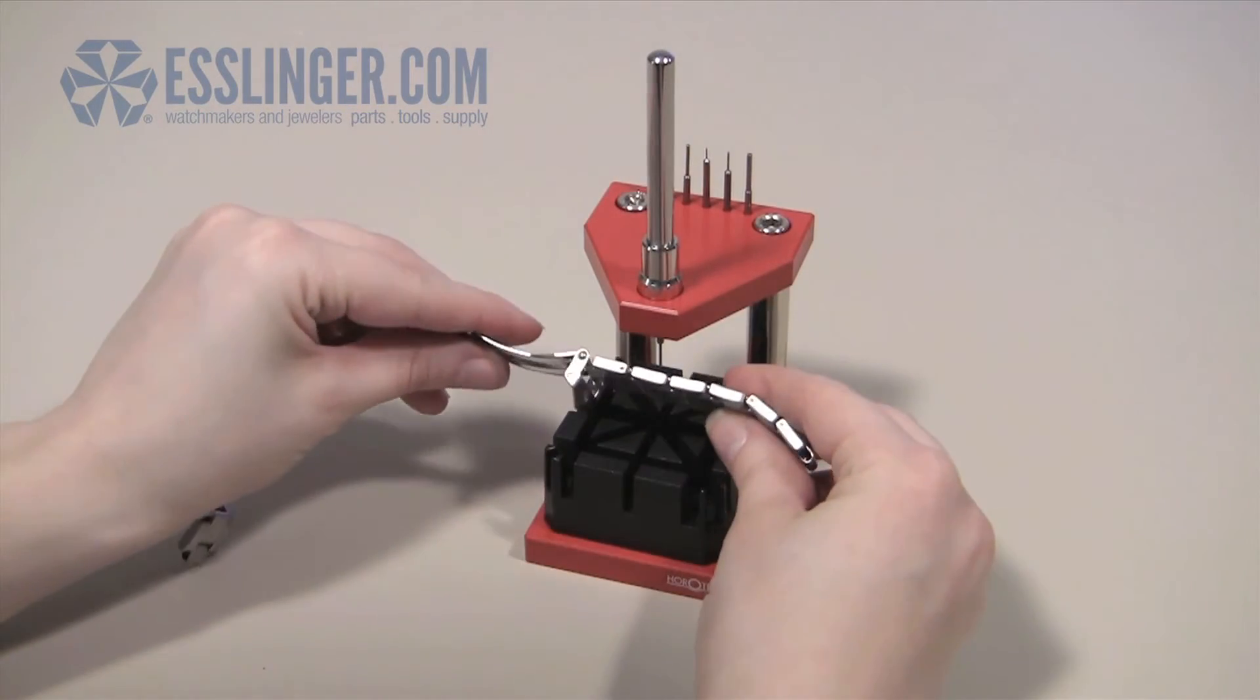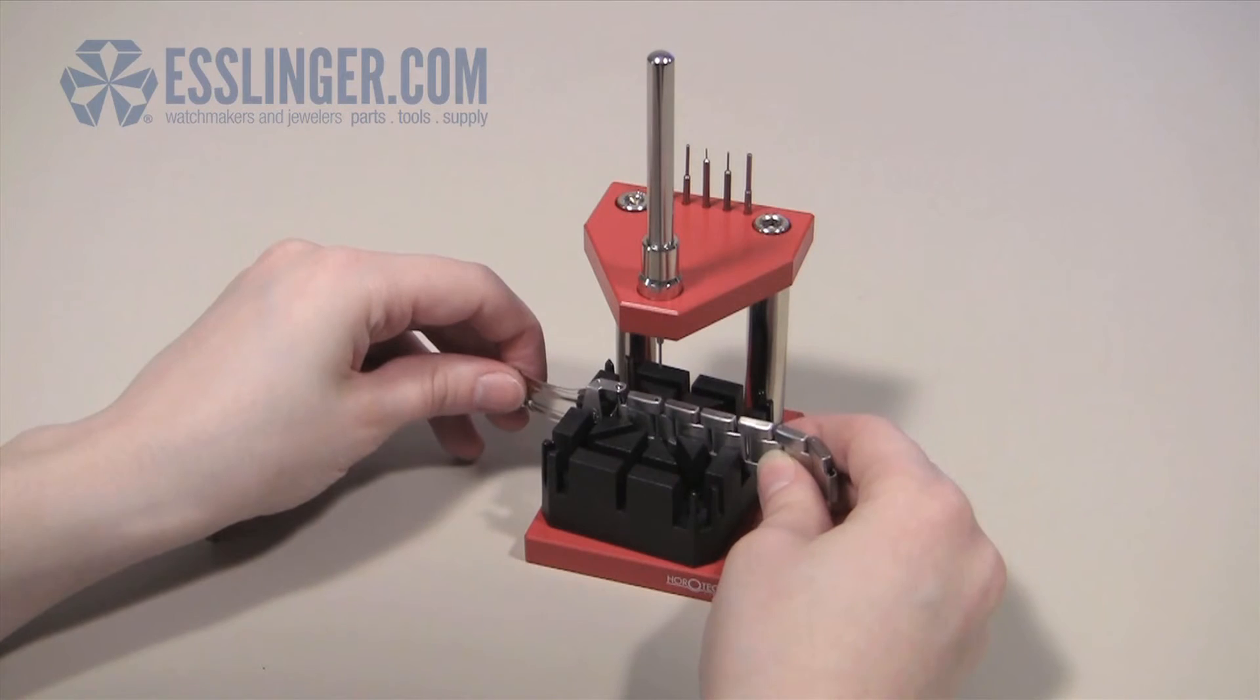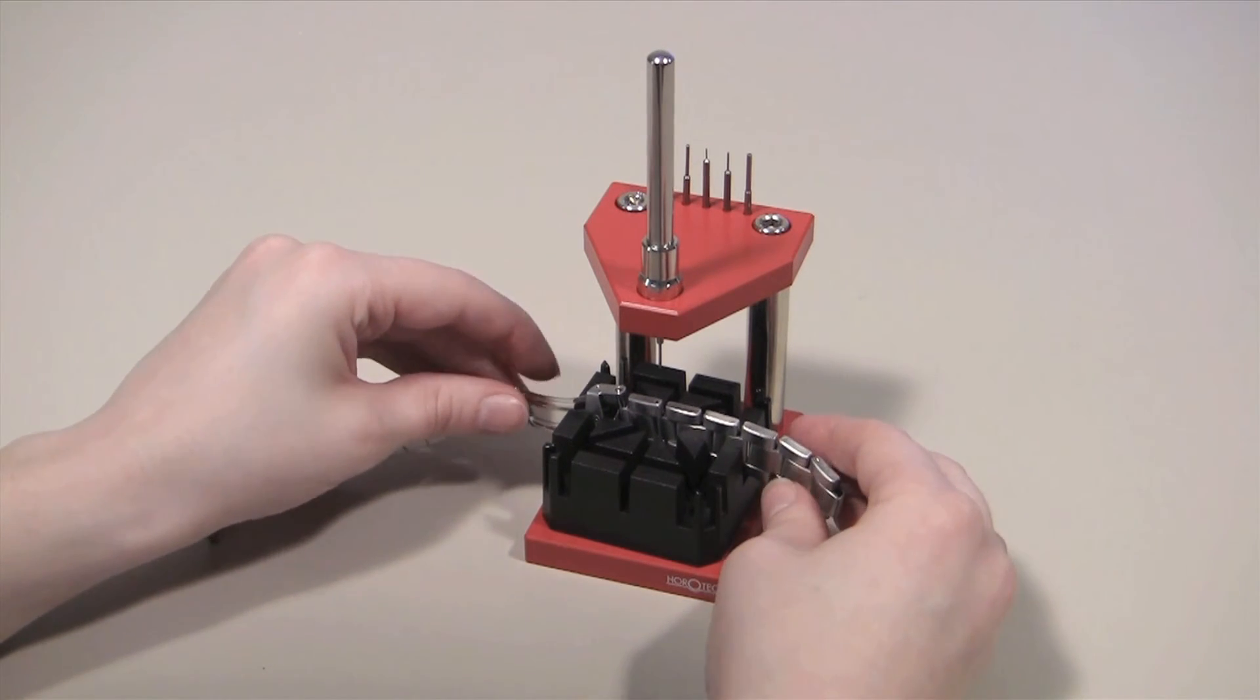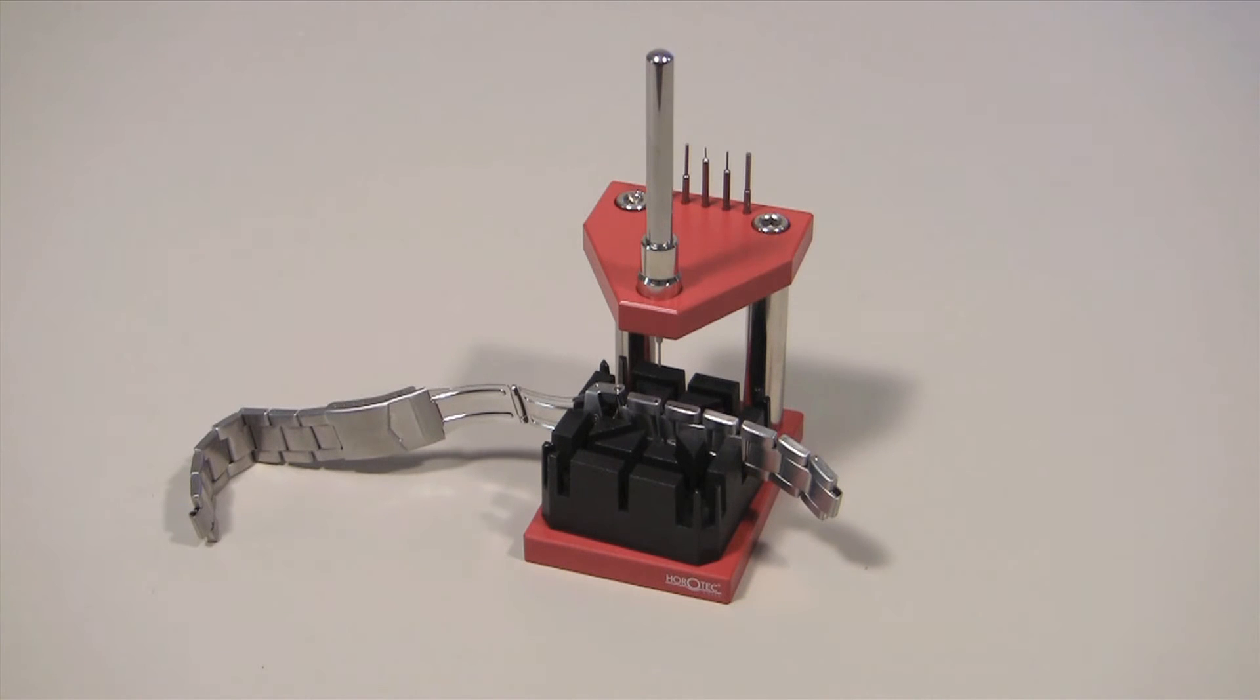The base comes with an attached, non-scratch plastic bracelet holder. It securely holds watch bracelets in alignment to assure that the band will not be damaged during the repair, leaving your hands free to work.